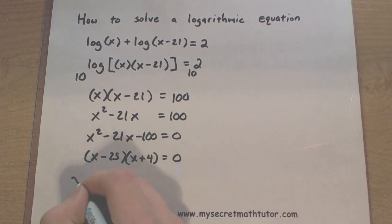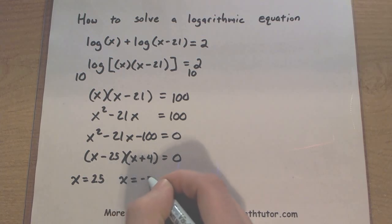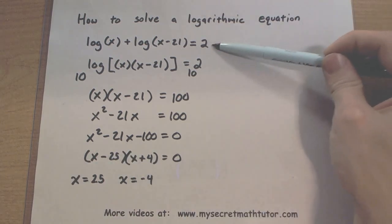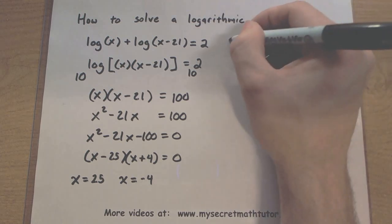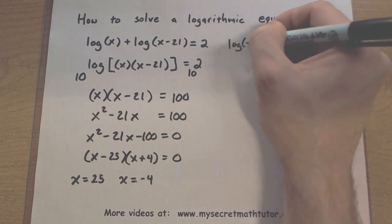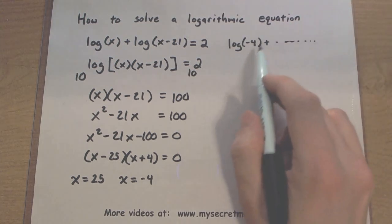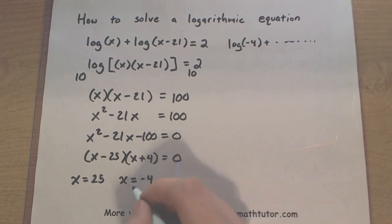So I basically get two possible solutions. Either x is equal to 25, or x is equal to negative 4. Now, these are my solutions to the quadratic equation, but they might not necessarily work for my original. In fact, there's a problem already with the x equals negative 4. This is because if you try and plug in a negative 4, you will end up with a negative in the logarithm. And logarithms are not defined for negative numbers, so let's go ahead and cross that guy out.